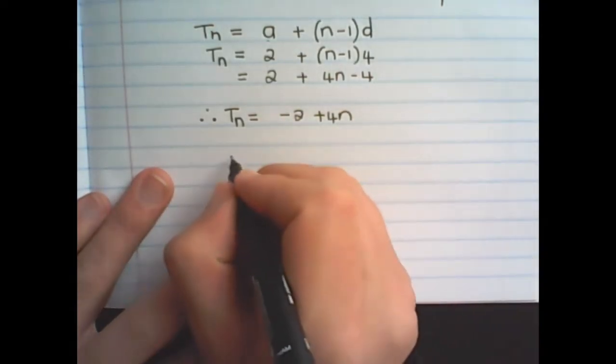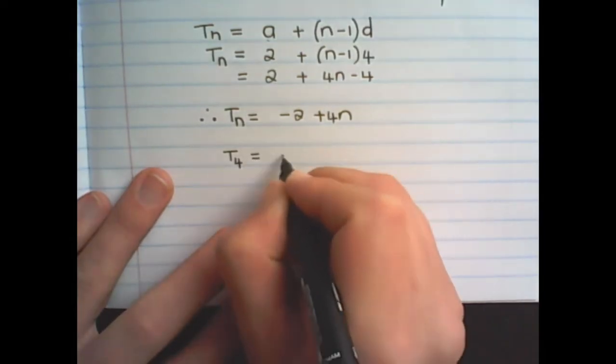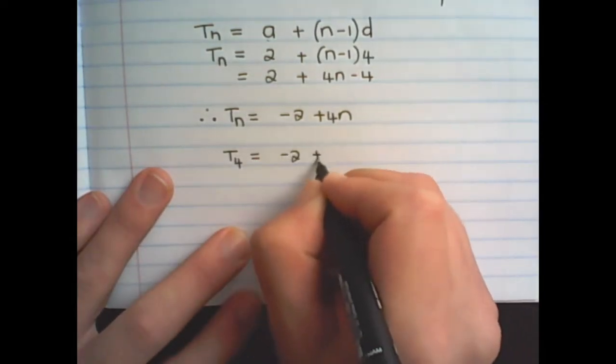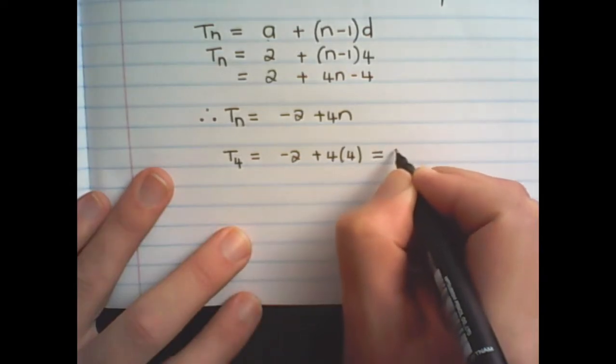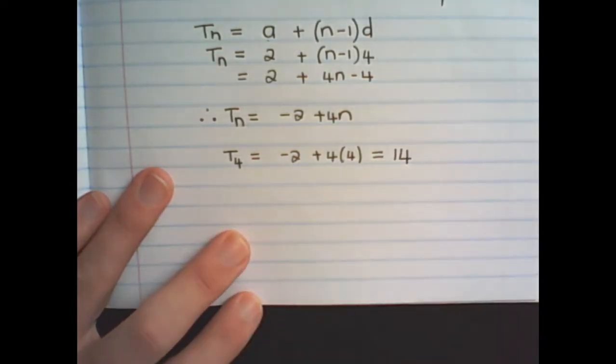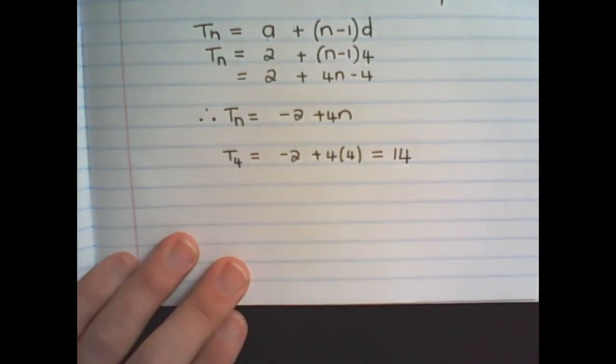So if I want to find the value of the fourth term, I would substitute n with 4. And we already know that that is 14.